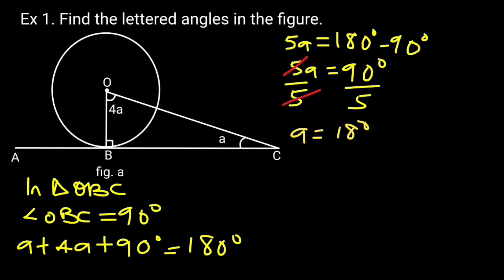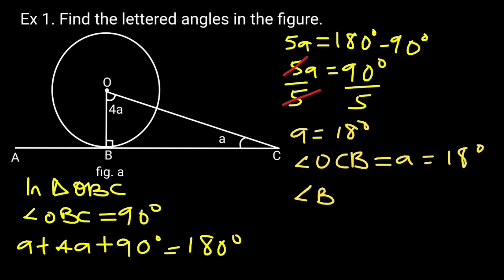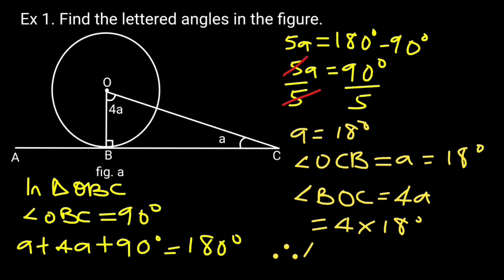Hence, angle OCB equals A, which is 18 degrees. Angle OCB equals 4A, which is 4 times 18, therefore angle OC equals 72 degrees.